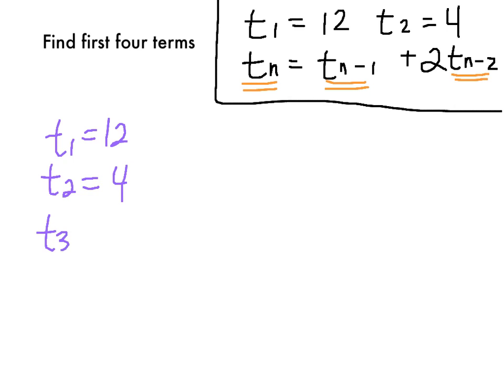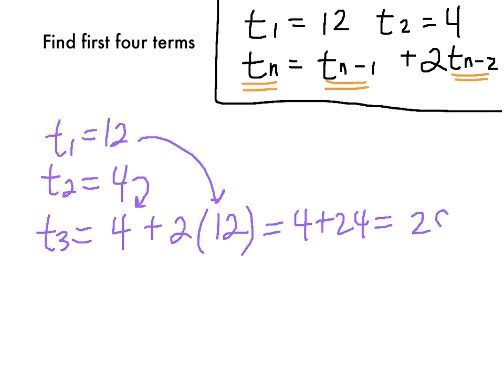Let's take a look at t sub 3. t sub 3 is going to be t sub n minus 1, which is the previous term. So we look back to, in this case, t sub 2, we're going to use our 4 here. Then we add to that two times t sub n minus 2. t sub n minus 2 means we need to go back two terms and use that term. So our 4 came in here, and our 12 is going here. What we get for an answer here, we have 4 plus 24, so our t sub 3 is 28.